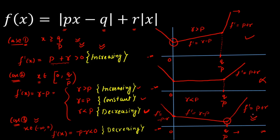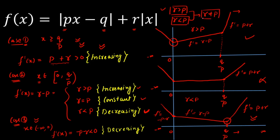Moving to the final answer: Graph one (r greater than p) is accepted, and Graph three (r less than p) is accepted. Graph two (r equal to p) is rejected. Combining these two accepted cases, our final answer is r not equal to p. This is the relationship between p, q, and r for which f of x attains its minimum value at a single point.